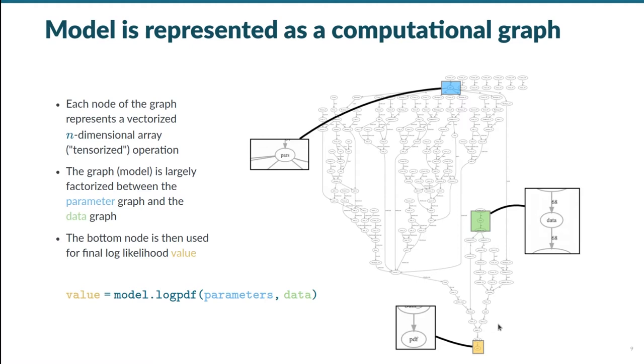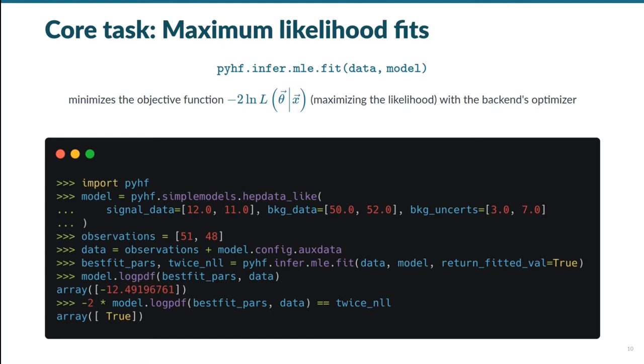We can now turn our attention to the core task of performing maximum likelihood fits with PyHF. Here we want to minimize the objective function, which is twice the negative log likelihood, as minimizing the negative log likelihood will result in maximizing the likelihood. We can see that the PyHF API for this is pretty transparent, and looking at the same minimal examples before, we see that performing the maximum likelihood fit with our optional return fitted val keyword argument returns the maximum likelihood estimate of the model parameters, as well as minus two times the log likelihood at these best fit parameters. Additionally, we can see in these final steps that we perform a demonstration check of that explicitly.